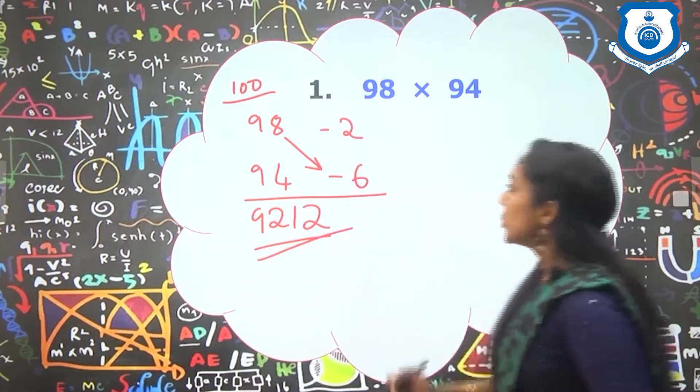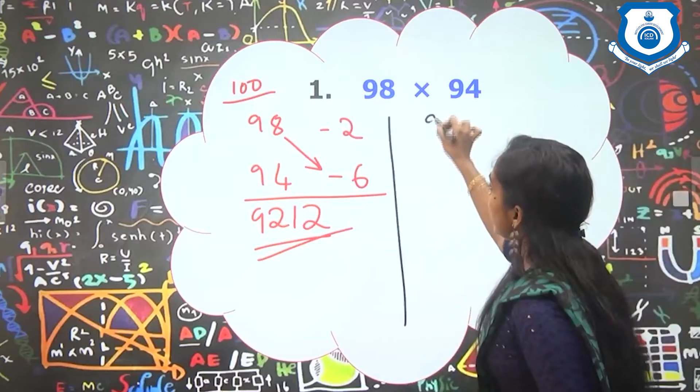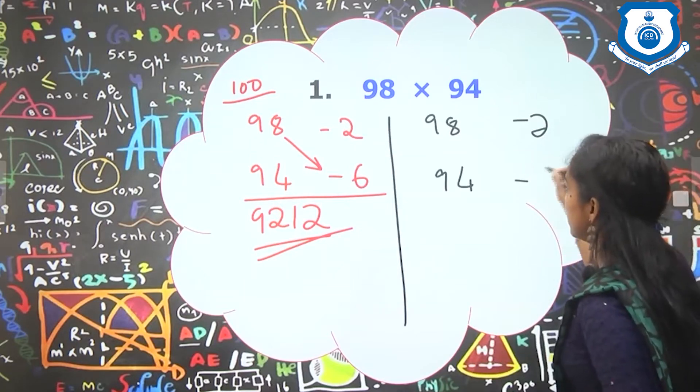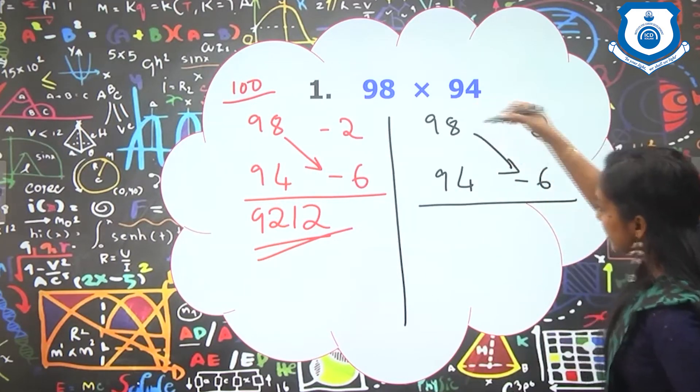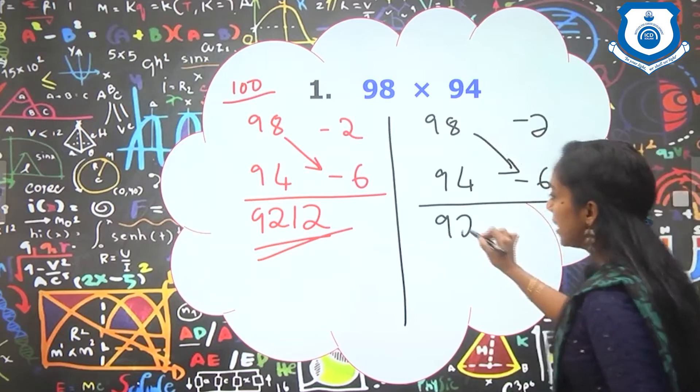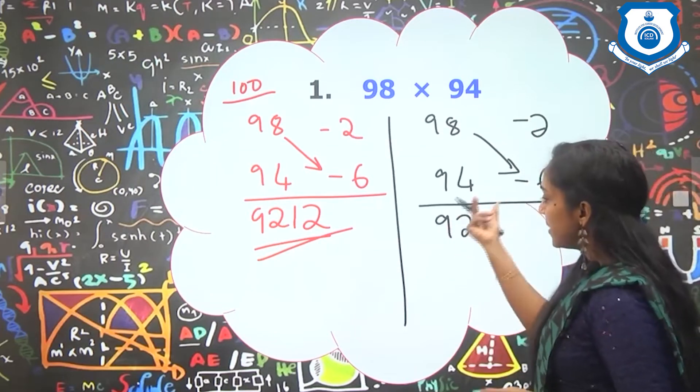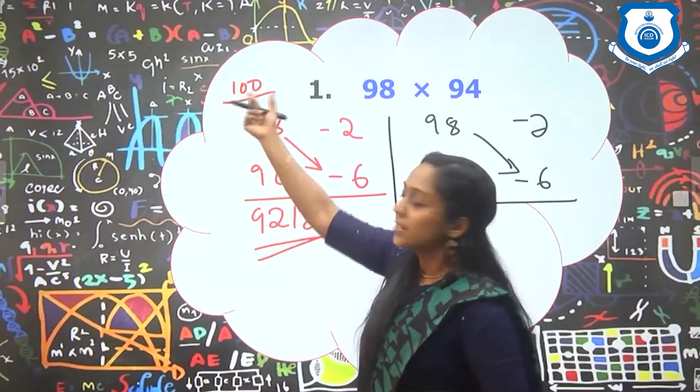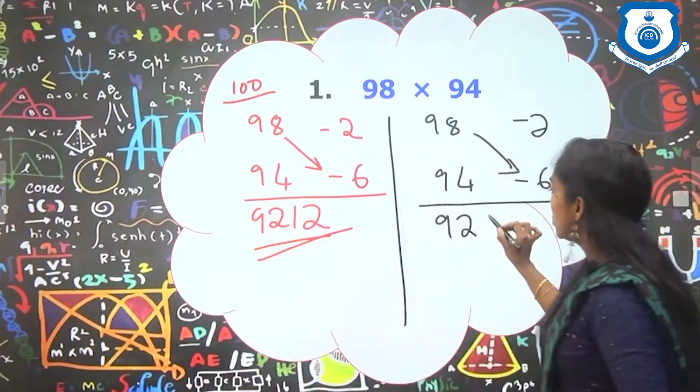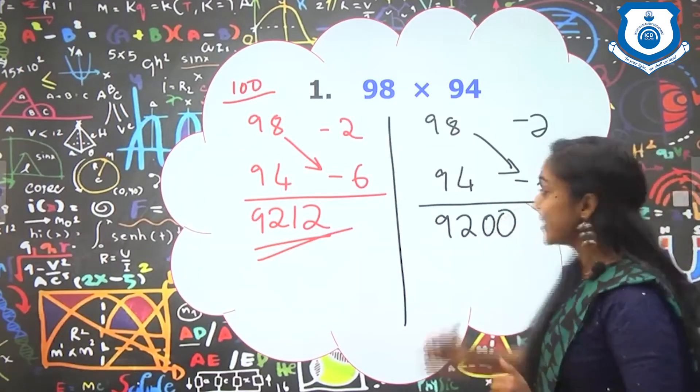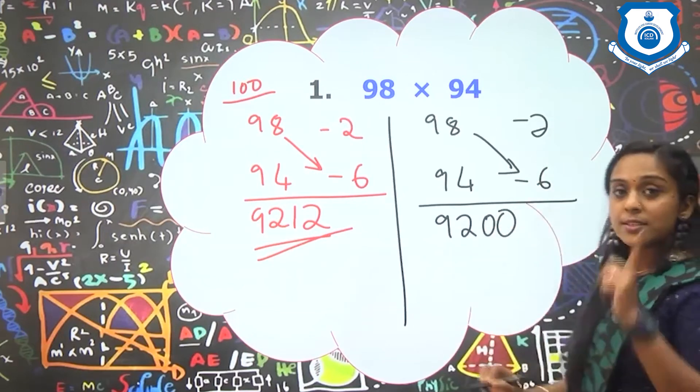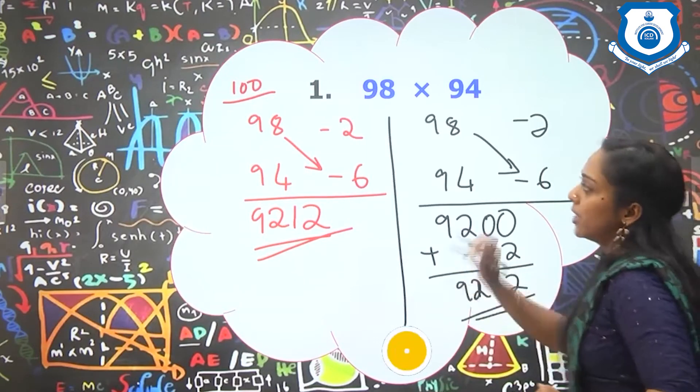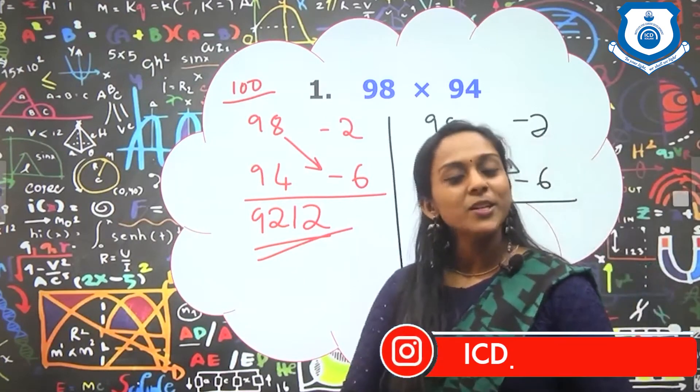So I will just explain the logic behind this. We know 98 is 2 less than 100, 94 is 6 less than 100. As the first step, we did 98 minus 6 which is 92. And after this, we have to multiply this 92 with our base. Whatever be our base, multiply that 92 with our base. In this question, our base is 100. So 92 into 100 is 9200. Next, minus 2 into minus 6 is plus 12. So we are adding this. This is the actual logic behind base method. So let's move to the next question.